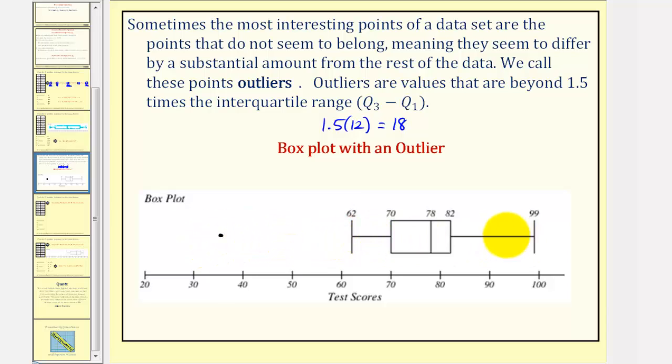This indicates that while most of the data is between 62 and 99, there is one outlier way down here at 35. And it is possible to have more than one outlier. We could have another point here at 40, since this value would still be more than 18 units beyond 70.